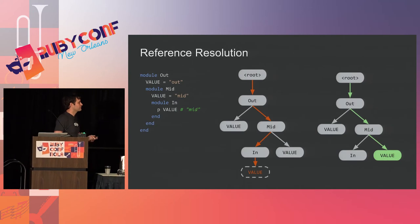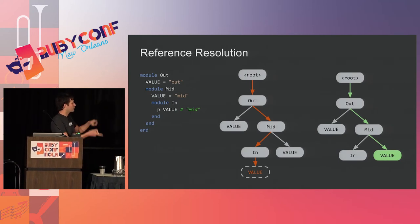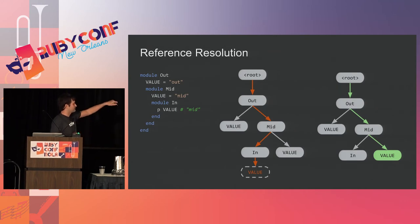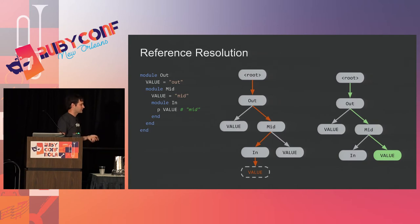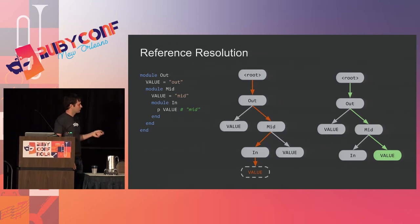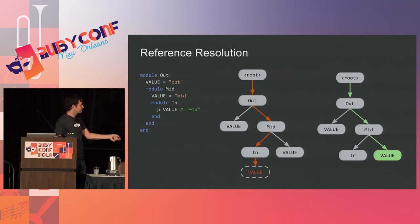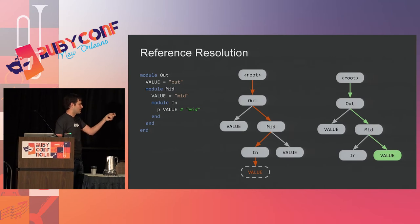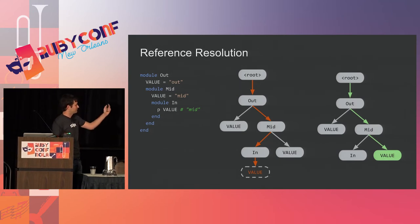Given our definition tree, we can use nesting to resolve a simple reference. We walk the nestings one by one. First we check the innermost nesting — Out::Mid::In — is Value defined there? Nope. Try the next one: Out::Mid. Is there a Value defined there? Yes, we found it. We've resolved that reference.